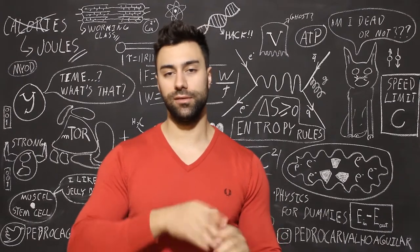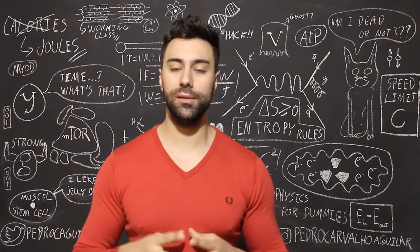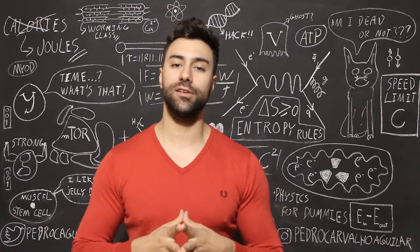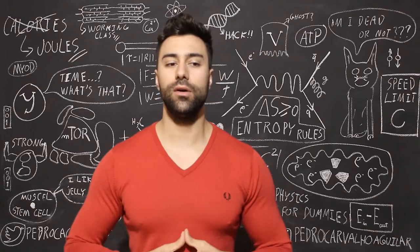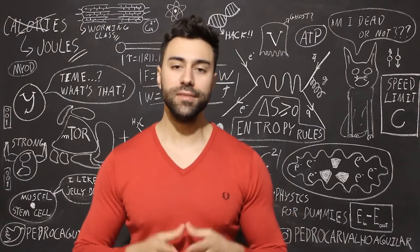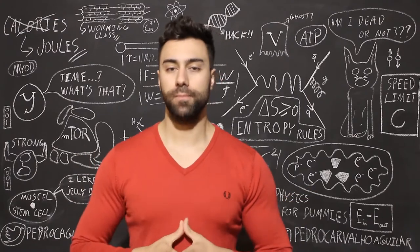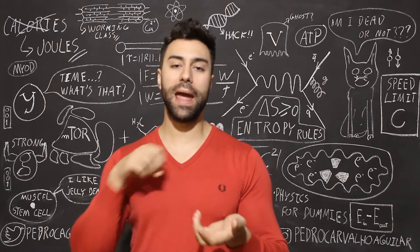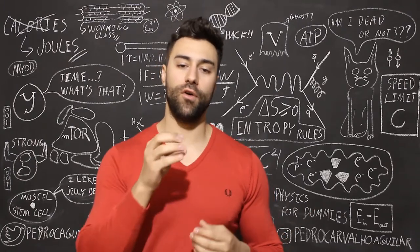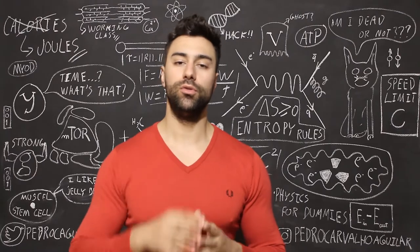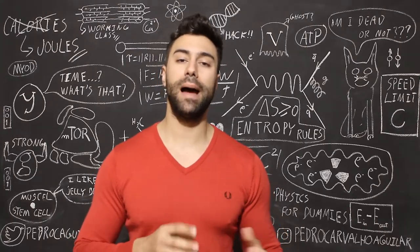That depolarization travels along the T-tube into the sarcoplasmic reticulum, where all the calcium ions are stored. Those calcium ions are released and go into the sarcolemma, where they bind to troponin. That pulls back tropomyosin, exposing all the binding sites for the myosin heads to bind to actin.